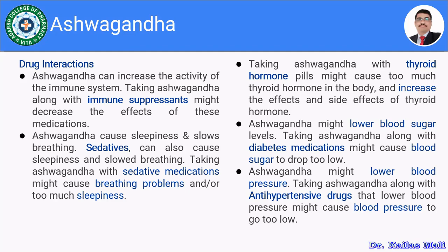The fourth drug interaction: Ashwagandha may lower blood sugar levels, so combining it with antidiabetic medications could lead to hypoglycemia. One should monitor blood sugar levels regularly if Ashwagandha is combined with diabetic medication. The fifth interaction is with antihypertensive drugs. Ashwagandha reduces blood pressure, and combining it with antihypertensive drugs may lead to hypotension. Blood pressure should be monitored regularly, or Ashwagandha should not be combined with antihypertensive drugs.